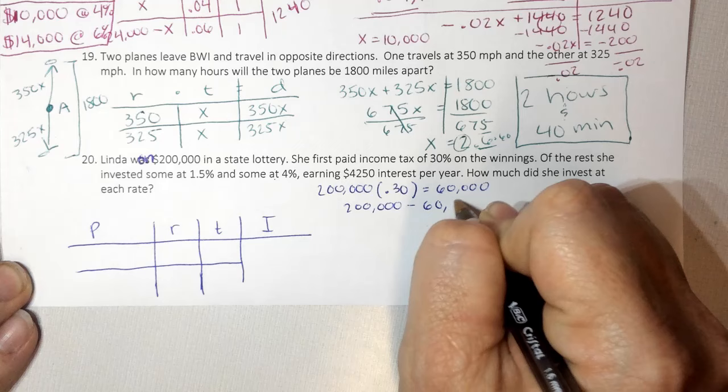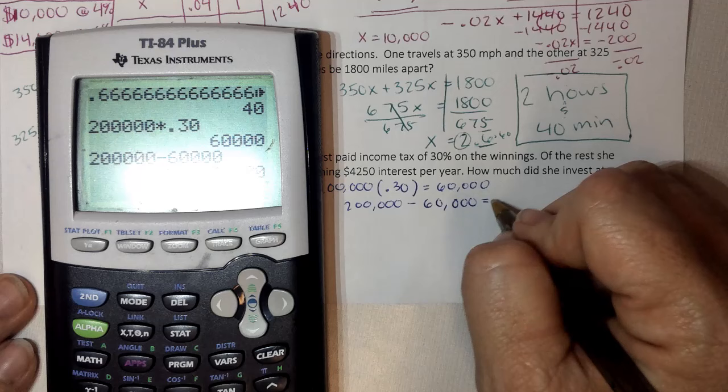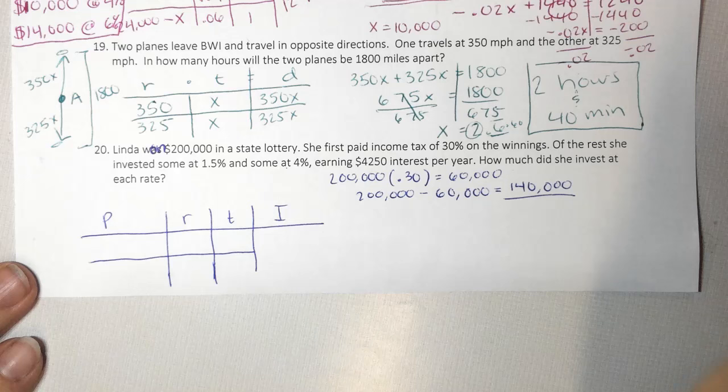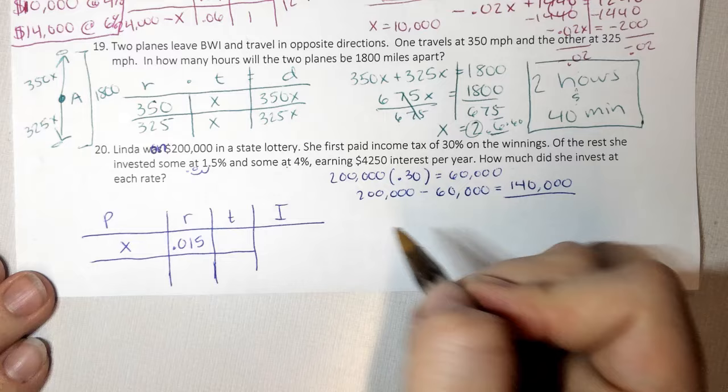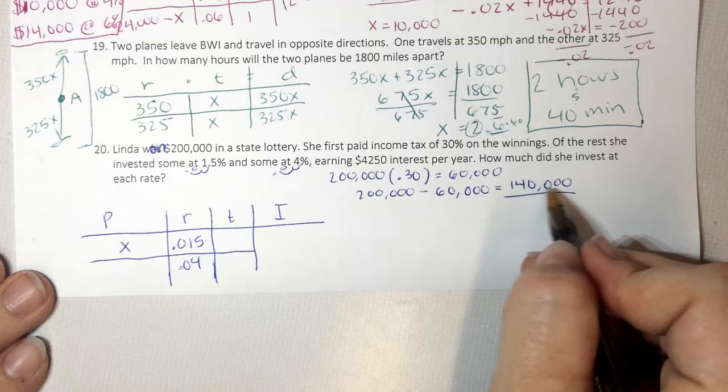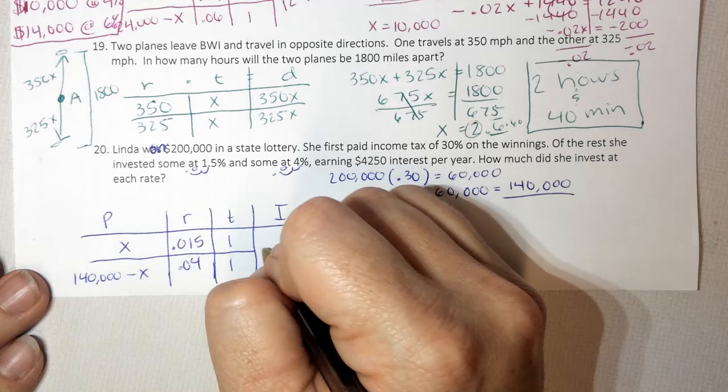So that's how much my total investment is. So it says, so she invests some of it at 1.5. So we don't know how much at 0.015 because we have to move that twice. And then some more at 4, the rest at 4, so 0.04. And I know my total invested was this. Time doesn't, it says per year. So how much didn't she invest each rate? So time is one. And she earned 4,250. So again, we multiply the top plus the bottom equals our big box.